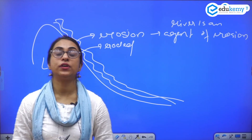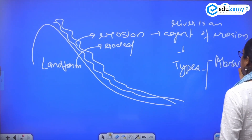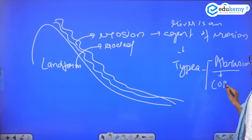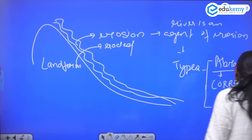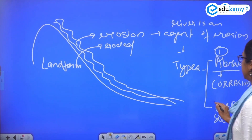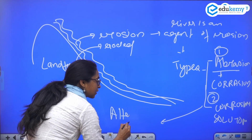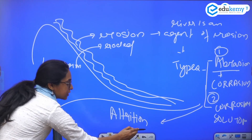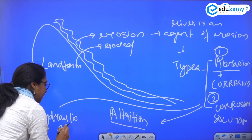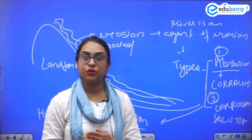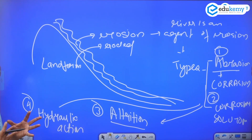So what are the types of erosion done by the river? The types of erosion are: abrasion, also known as corrasion; corrosion, also known as solution; attrition; and hydraulic action. So these are the four major erosional processes — abrasion, corrosion or solution, attrition, and hydraulic action.